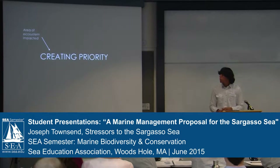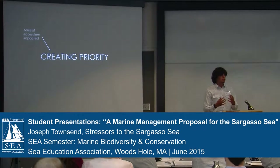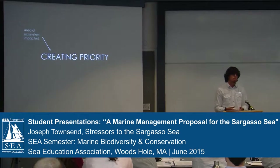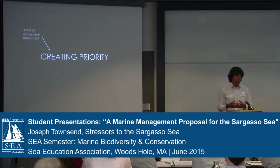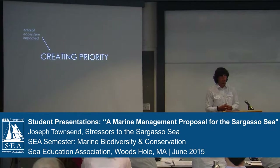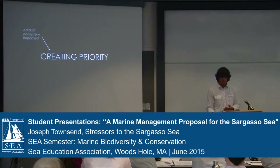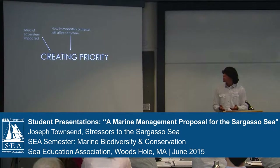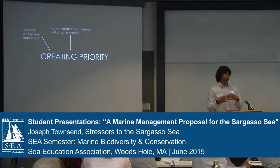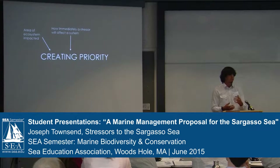The first factor is the area of the ecosystem impacted — this is talking about the scope. Some stressors will be affecting the entire Sargasso Sea, others on a more local level, and this will be an important factor when we're talking about these various stressors. Next, we want to talk about timing: how immediately or how prolonged a certain stressor is affecting the system.